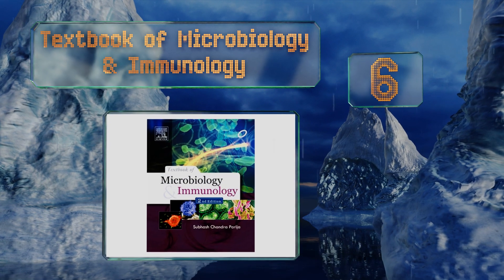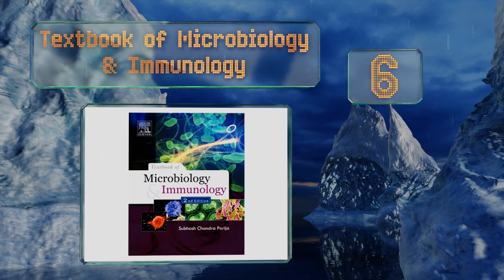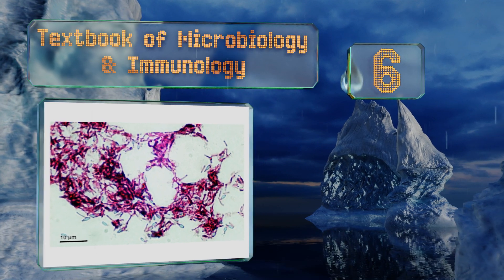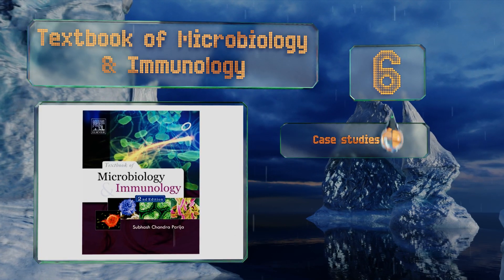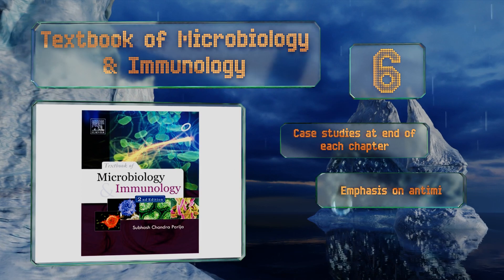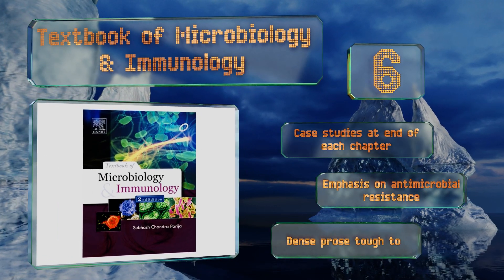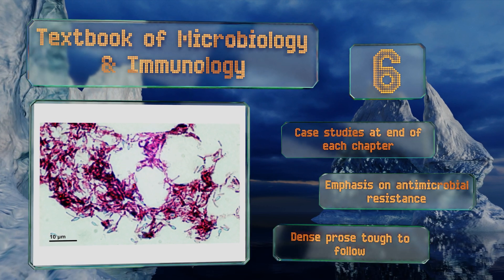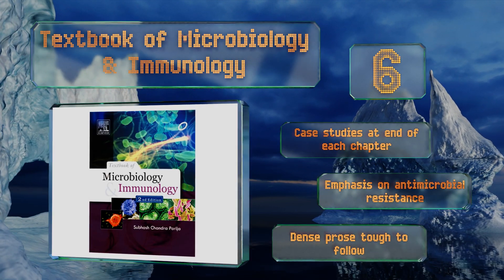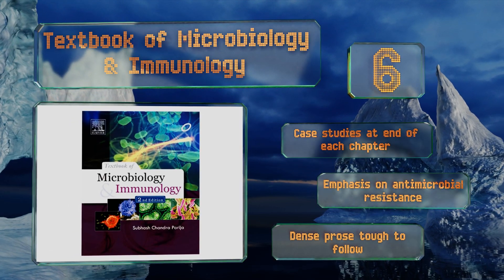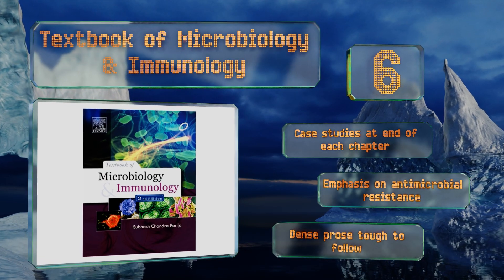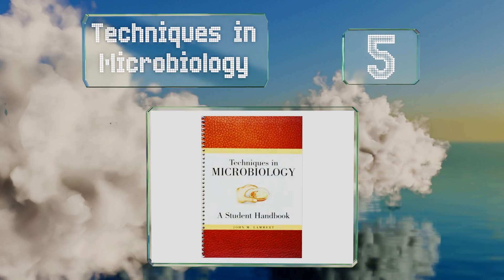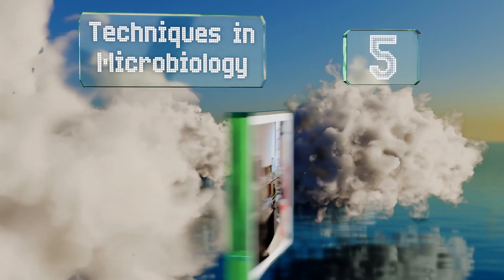Moving up our list to number 6: if you made it all the way to graduate school, you're probably on the lookout for opportunities to save money. Textbook of Microbiology and Immunology is an advanced read fit for those pursuing a career in medicine, at a price point starving students can afford. It features case studies at the end of each chapter and an emphasis on antimicrobial resistance. However, the dense prose is tough to follow.